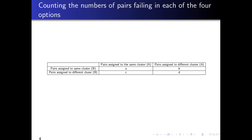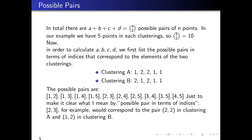So we want to calculate A, B, C, and D. We have to look at the possible pairs which we want to compare. In total there are n-choose-2 possible pairs of data points. Since we have five items in each cluster, there are in total ten possible pairs.